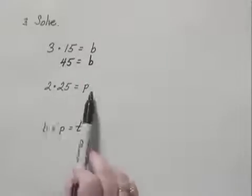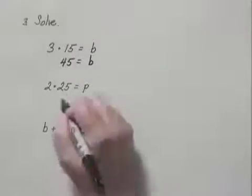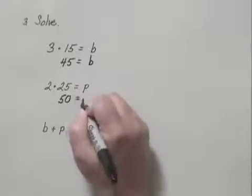For the second one, 2 times 25 equals P. Well, 2 times 25 is 50, so we get 50 equals P.